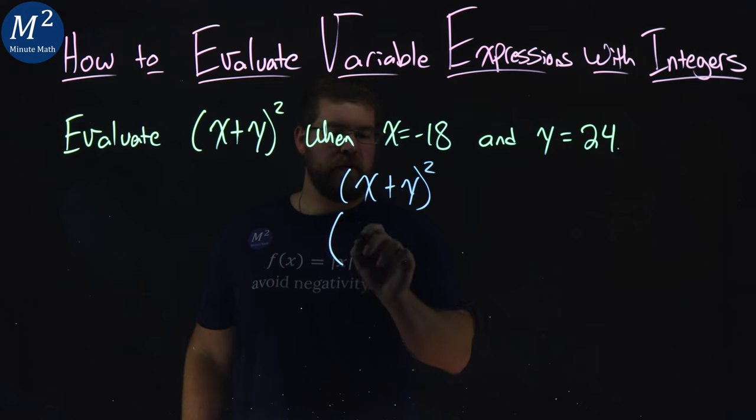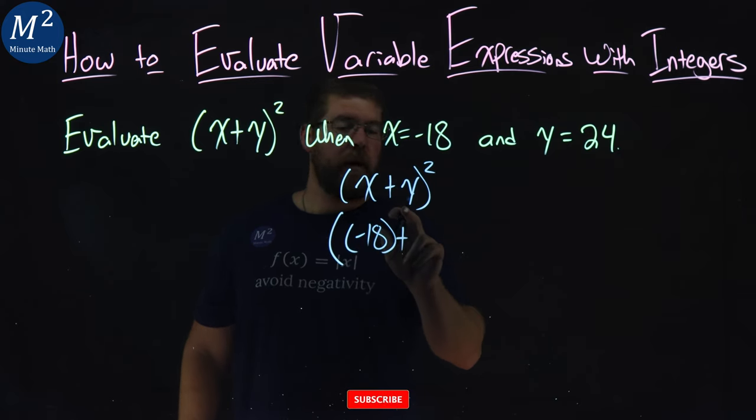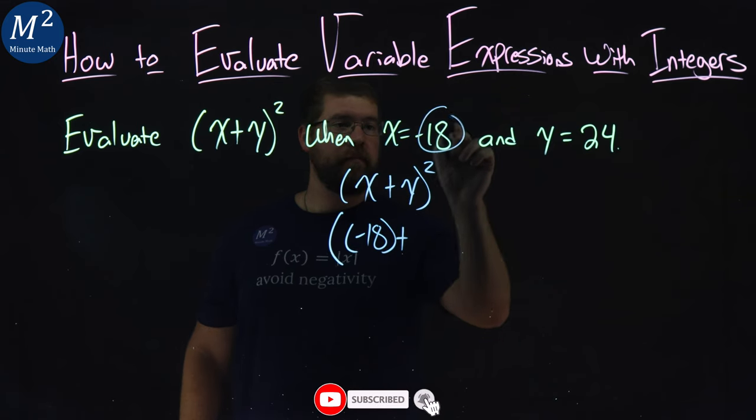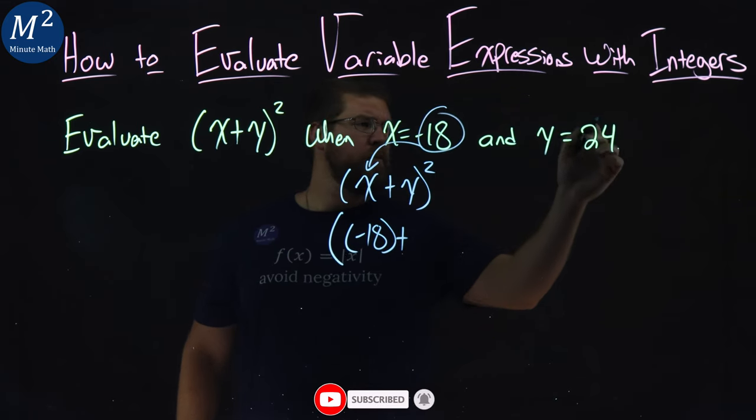So, parentheses, first one here, second one for the x, negative 18 plus, but now I have a y. Well, the y, they said, was 24.